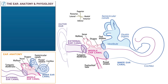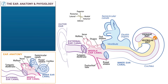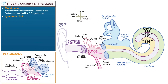Draw the cochlear duct. Then label the vestibular duct, which is continuous with the vestibule. And next, label the tympanic duct, which ends in the round window. Hence the round window is also called the secondary tympanic membrane. Denote that Reissner's membrane separates the vestibular and cochlear ducts, and the basilar membrane separates the cochlear and tympanic ducts. Denote that the vestibular and tympanic ducts are filled with perilymphatic fluid, which is high in sodium and low in potassium, much like extracellular fluid.